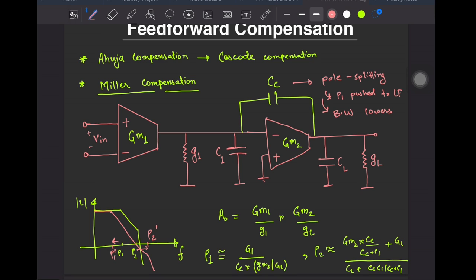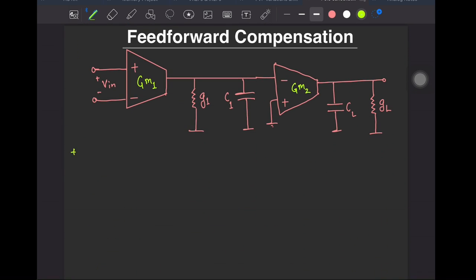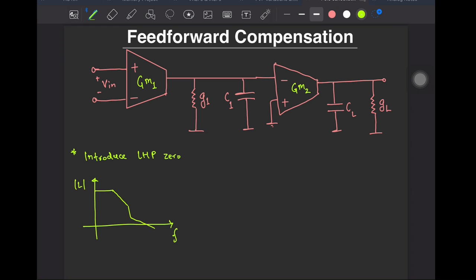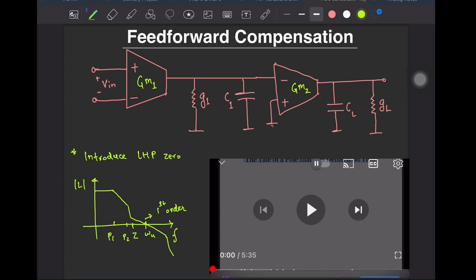Now let's get to the topic of today's video — feedforward compensation. The idea here is not to split the poles, but to introduce a LHP zero that in some sense nullifies the effect of one of the poles, resulting in a good phase margin. The Bode gain plot should look something like this, where the system appears like a first order system around the unity gain frequency. If you would like to look at a very simple technique of nullifying poles with zeros, check out my video titled Pole Cancellation.